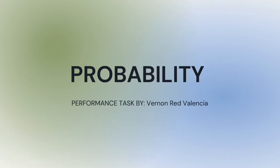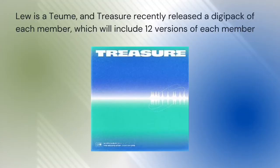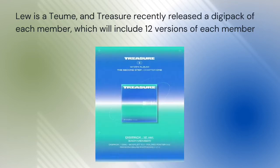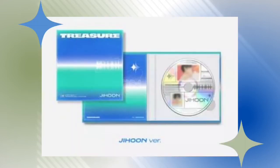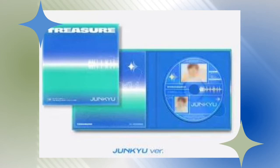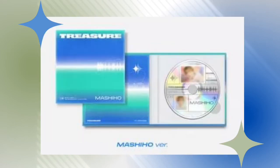Good day everyone, this is Vernon Red speaking, and this is my performance task in probability. Lu is a fan of TREASURE, and they recently released a digipack of each member, which includes 12 versions — one for each member: Yun-suk, Ji-hun, Yoshi, Jungkyu, Mashihou, Jeyuk, Asahi, Yedam, Doyong, Haruto, Jungwoo, and Jungwon.